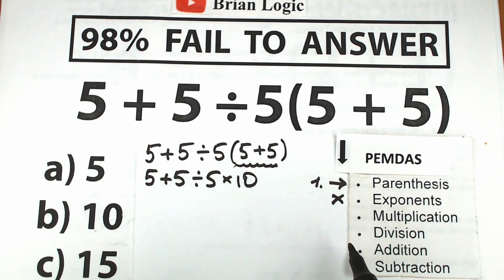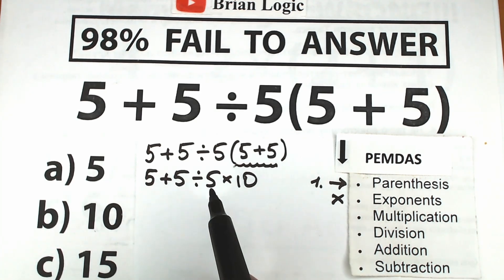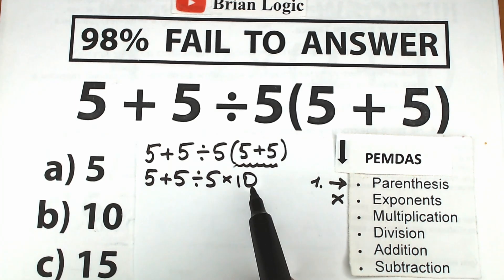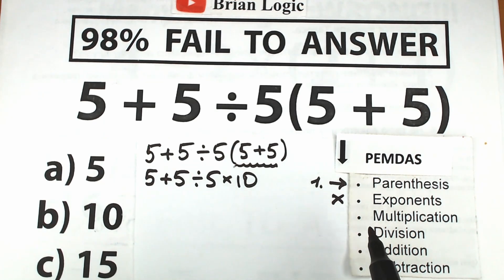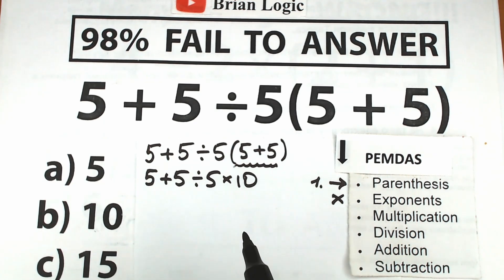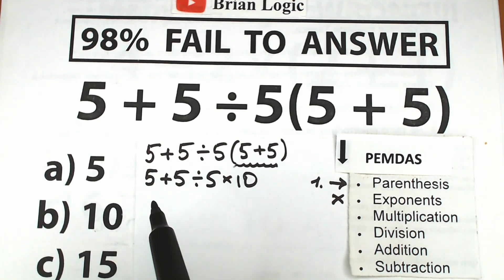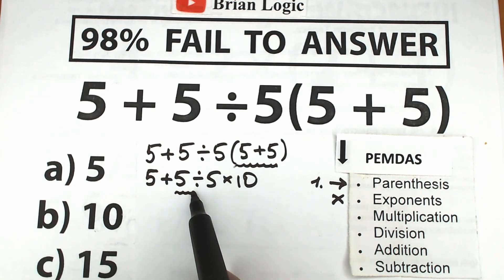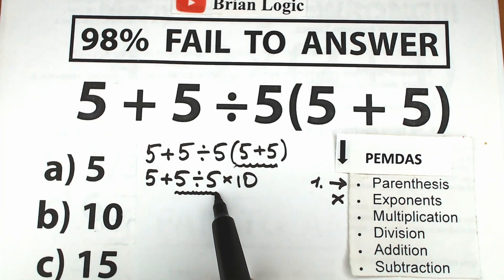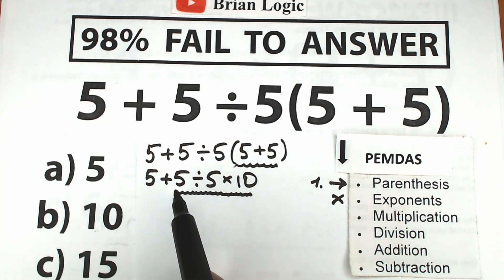What about the next step — the multiplication and division group? A lot of students say we should multiply first: 5 times 10. But it doesn't work like that. With PEMDAS, we should scan what is the first sign from left to right. We have a division part here and a multiplication part here.